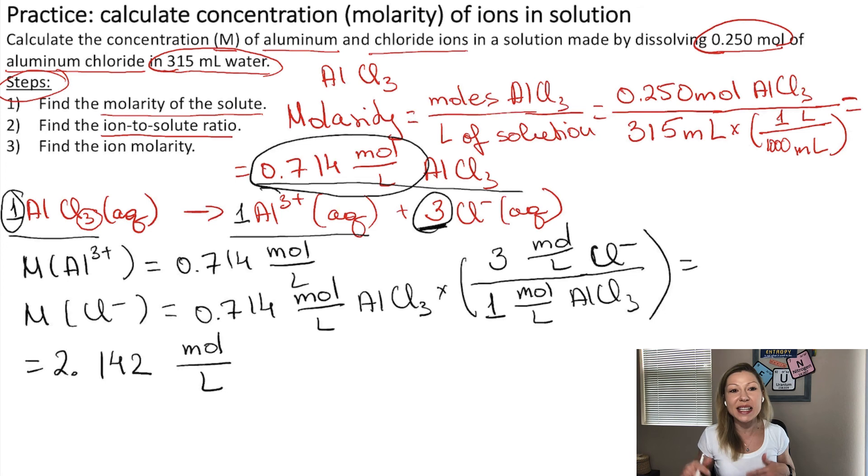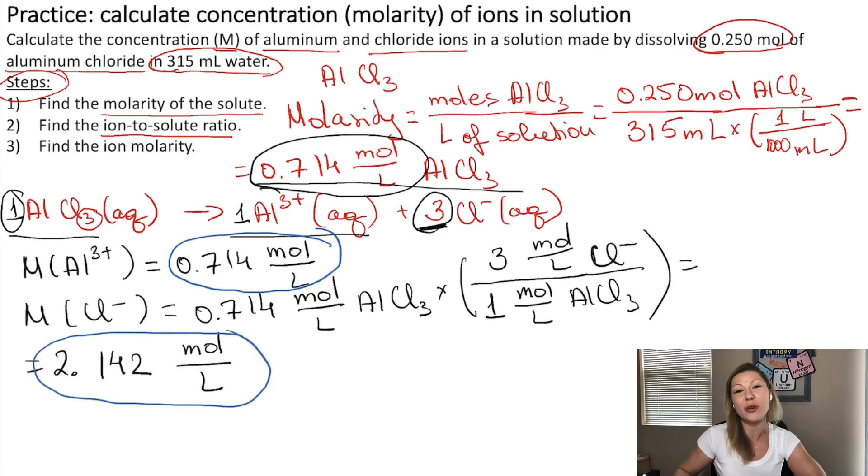Okay, I hope this makes sense. The concentration of aluminum ions, in this case, 0.714 mol per liters, and the concentration of chloride ions is 3 times of that, 2.142 mol per liters. Have a great day, and see you in the next video.